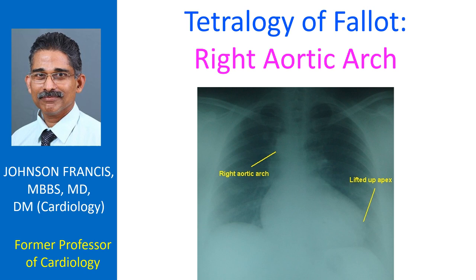Tetralogy of Fallot is the commonest cause of right aortic arch in an adult. A pathological study of 10 cases of right aortic arch and tetralogy of Fallot was reported by Stephen et al. Mirror image branching was noted in 7, aberrant left subclavian in 2, and isolated left subclavian in 1. Friedberg described right aortic arch in tetralogy of Fallot in 3 successive generations.